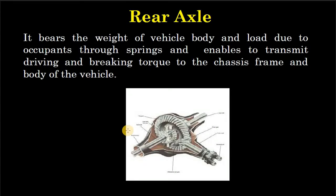Now rear axle — it bears the weight of the vehicle body and load due to occupants through springs, and enables to transmit driving and braking torque to the chassis frame and body of the vehicle. इस पर वाहन की body का भार और इसमें बैठने वालों का वजन spring के ज़रिए उठाया जाता है। ये वाहन के chassis में और body तक driving तथा braking torque को भेजती है।